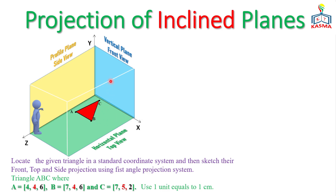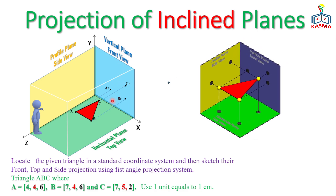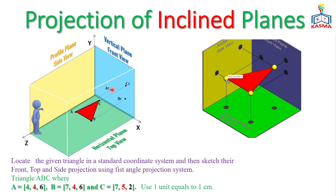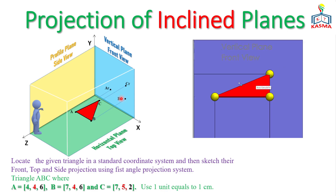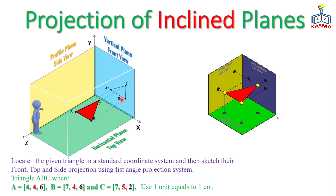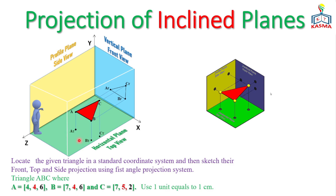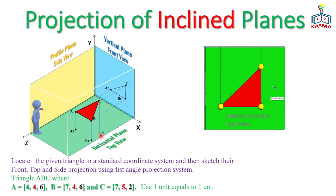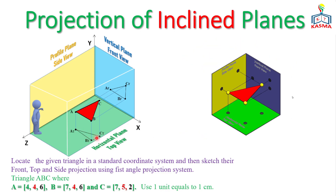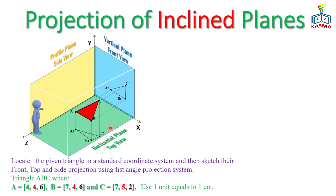Now for the front, top, and side projections using the first angle projection system — the front view is in the center, the top view is below the front view, and the right side view is on the left. For the front view, we project points A, B, and C onto the vertical plane to get A-front, B-front, and C-front. Connecting these gives the front view projection. For the top view, we project onto the horizontal plane to get At, Bt, and Ct, and connecting them gives the top view projection.